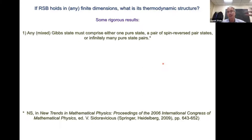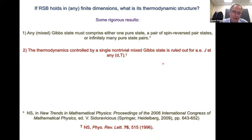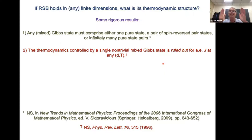The second thing came as a bit of a shock when we first published it. We proved that the original picture implied by replica symmetry breaking — that the equilibrium state is a mixture of many pure states sitting in a single mixed Gibbs state — is rigorously ruled out, with probability one, for any dimension and at any temperature. So that means we have to modify our conception of replica symmetry breaking.